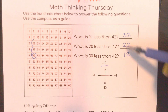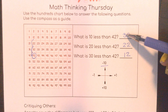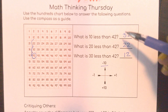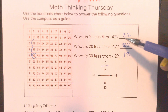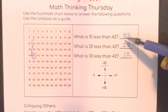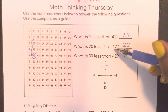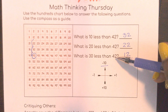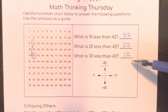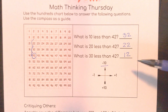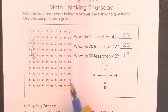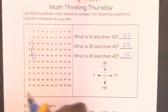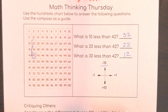Notice that in the tens place we're going down — going backwards. 42, 10 less was 32; 42, 20 less was 22; 42, 30 less was 12. Remember to ask your teacher or print out a hundreds chart and keep it to look at the patterns.